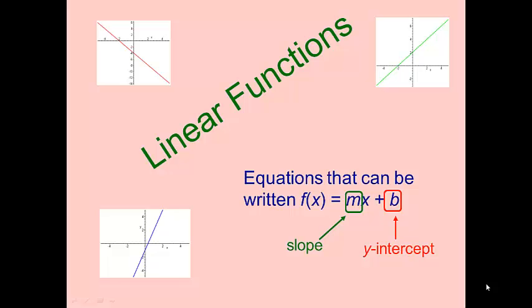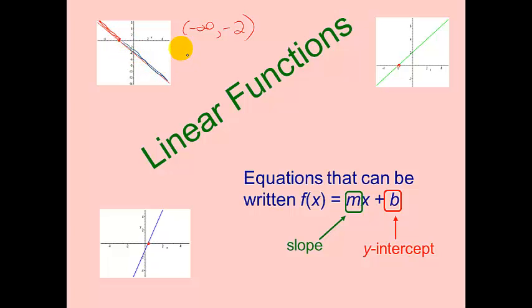Other things you may ask would be the zeros of the function, and the zeros are where the function equals zero — those would be the x-intercepts. If we ask the intervals where the function was positive, that would simply be where the function is above the x-axis. In this particular case, that would be from negative infinity to negative 2. Intervals where the function was negative would be below the x-axis, from negative 2 to infinity.